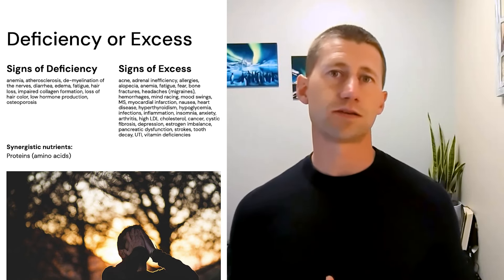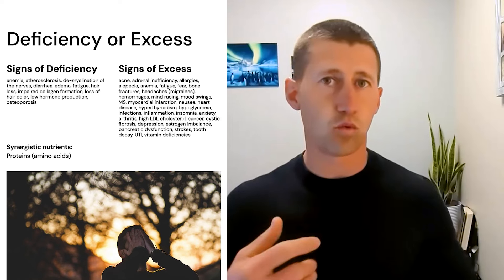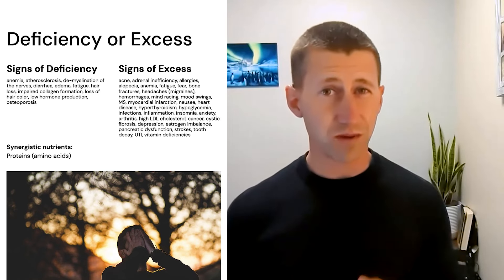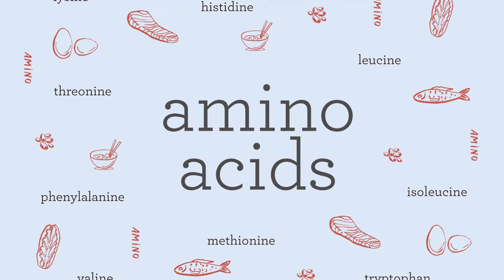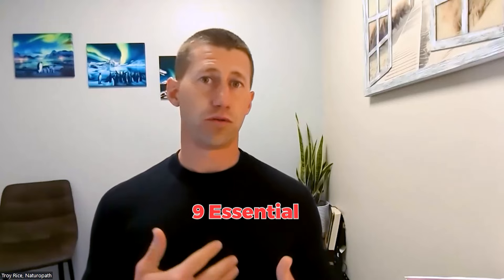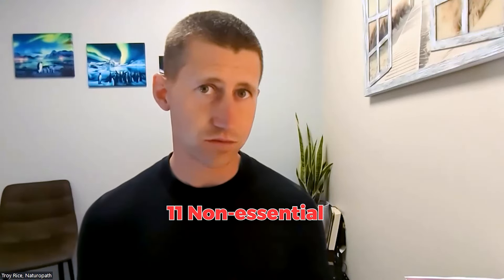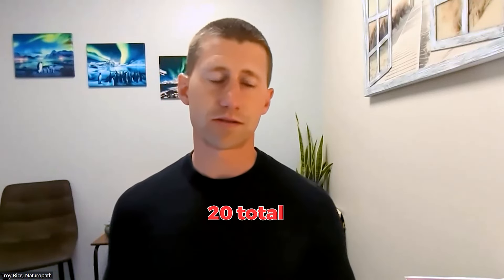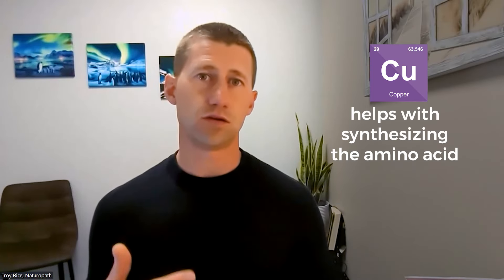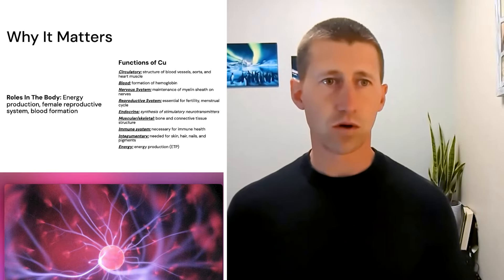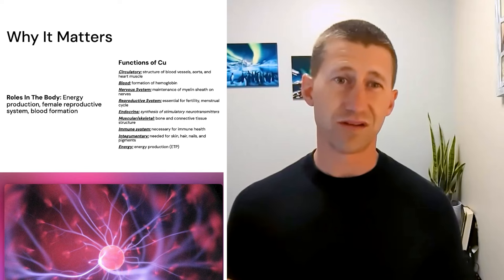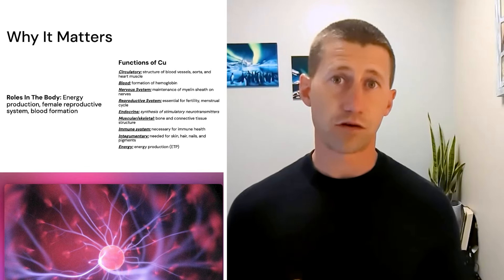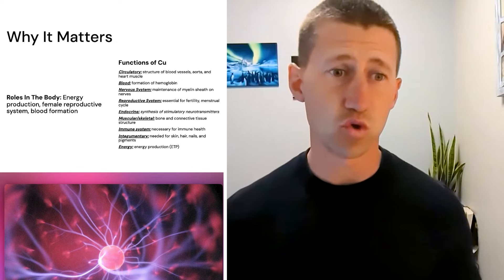I like to list things that are synergistic, so things that work with copper in the body. One of the major ones are proteins. And when I say proteins, I mean amino acids. There are nine essential, there are 11 non-essentials, so 20 complete amino acid proteins. Copper is something that helps with synthesizing and utilizing those amino acids in the body. So why should you even care about this?